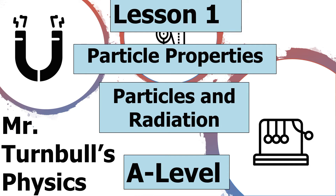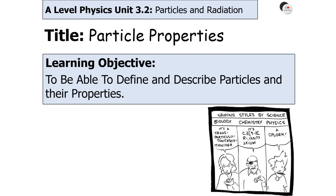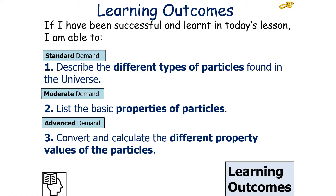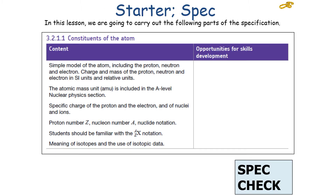Hello and welcome to today's lesson where we're going to look at the properties of particles, which is found in the Particles and Radiation topic for AQA A-level Physics. In today's lesson, we're going to try to define and describe particles and their properties. If we're successful, we'll describe the different types of particles found in the universe, list the basic properties of particles, and convert and calculate the different property values of particles, which links into the AQA A-level Physics specification: the constituents of the atom.